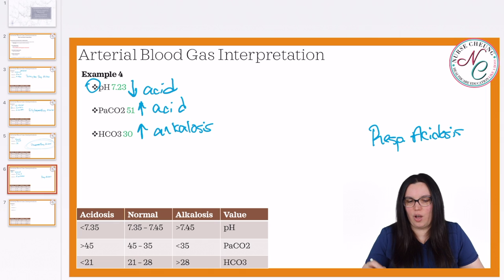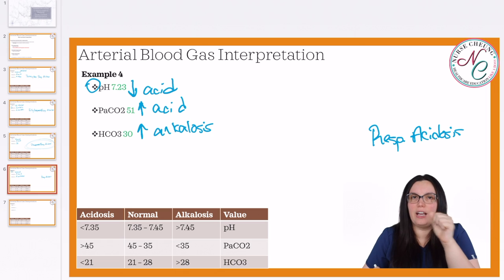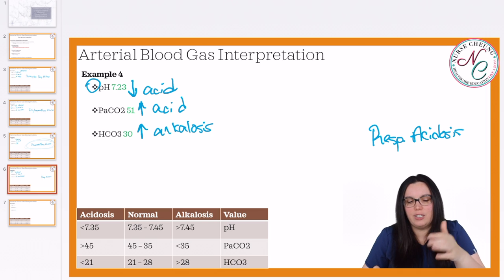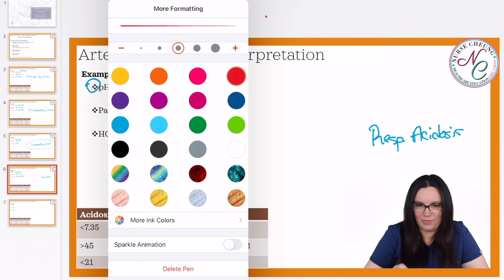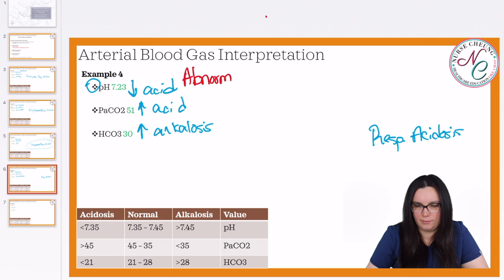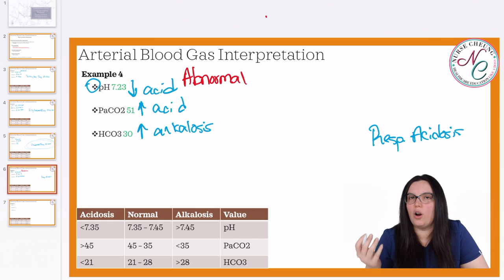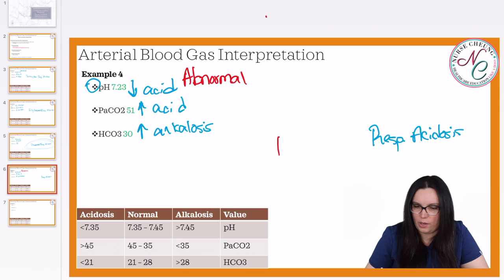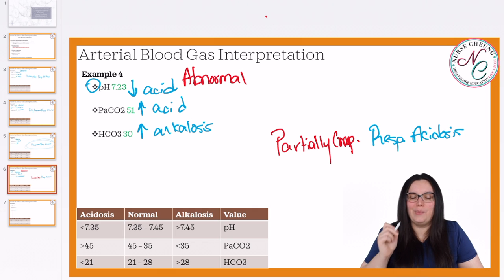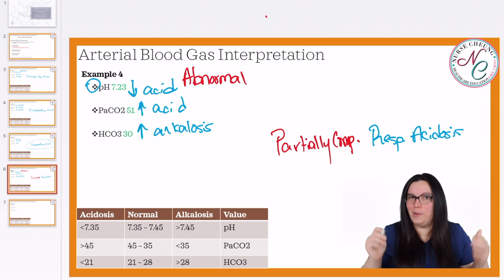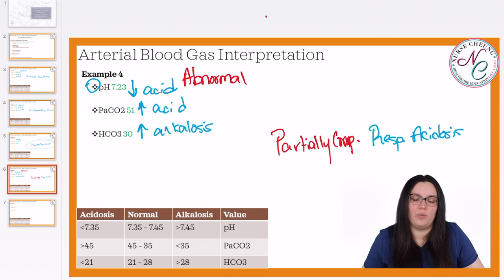We know there's some kind of compensation. But what kind? We take a look at our pH. Is our pH normal or abnormal? Our pH is still technically abnormal. So if our pH is abnormal, we are compensating, but it's not a full compensation. So we only have a partially compensated respiratory acidosis. It's partially compensated because the HCO3 is now alkalotic to balance out that acidosis in the respiratory component, but it's not enough compensation to bring us to full compensation because we still have an abnormal pH. So again — partially compensated respiratory acidosis.